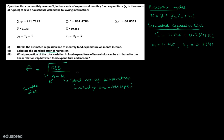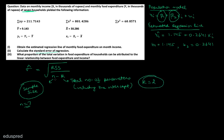Before we figure out the numerator, let's first talk about the denominator. n is the sample size, and we are given data for 7 households, so n equals 7. k is the total number of parameters including the intercept. In our population model we have two parameters, beta 1 and beta 2, so k equals 2. The denominator is therefore 7 minus 2, which is 5. Now let's see how we can find the numerator, that is the residual sum of squares.